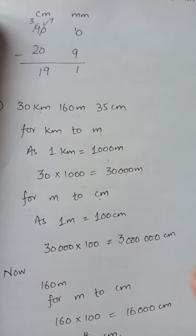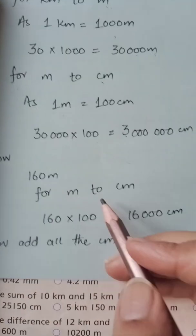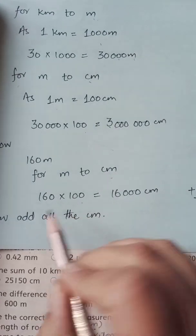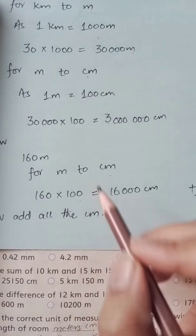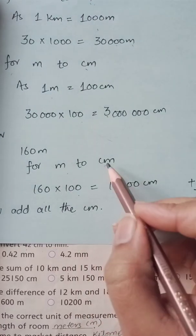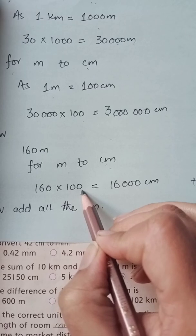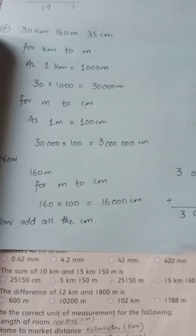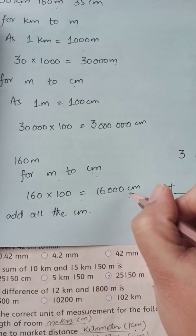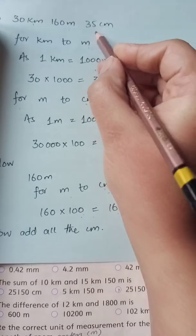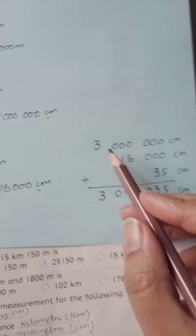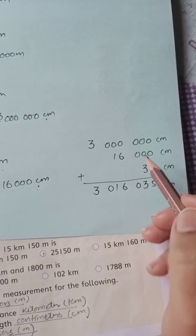Now we convert 160 meters to centimeters. Since 1 meter = 100 cm, we multiply 160 by 100, giving us 16,000 centimeters. The 35 cm is already in centimeters. Now we add all three: 3,000,000 plus 16,000 plus 35. We align them carefully by place value — ones under ones, tens under tens, hundreds under hundreds — and add them together.